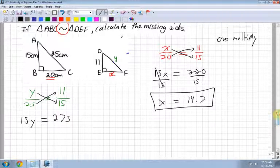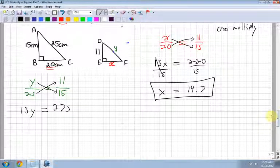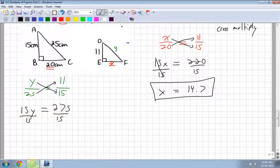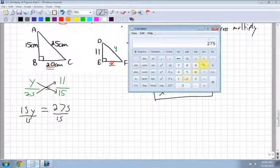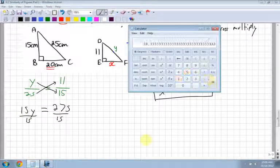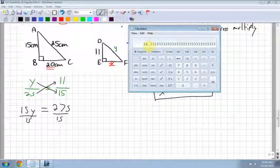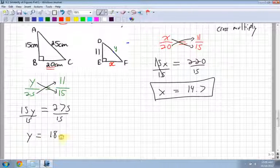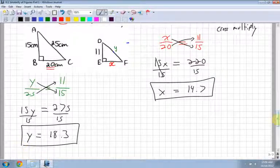Now what do I do? Divide by what? The 15. Why do I divide by 15? Because it's in front of the Y. So divide by 15 on both sides. 275 divided by 15 equals 18.3. Notice I round down because the 3 next to it is less than 5. So Y equals 18.3. There is how to solve for proportions, how to tell if they're similar or not. We will look at next section.